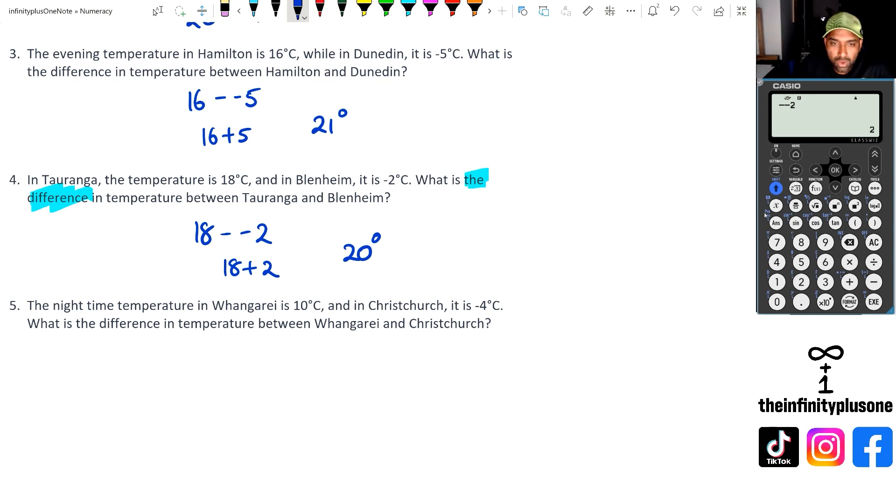And finally, we've got Whangare, which is at 10 degrees. Christchurch is at minus 4. So we've got 10 take away negative 4. Again, same thing as saying 10 plus 4, which means the difference between the two towns or cities is going to be 14 degrees for their temperatures.